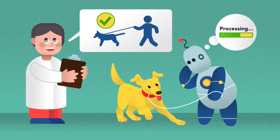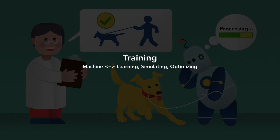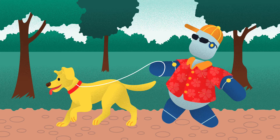We use the term training in reference to the task of helping a model learn its world. In this phase, algorithms construct the model by learning, optimizing, simulating, and scaling. This phase is performed by the machine. The combination of designing a solution template and the computation of training produce a model of the world.